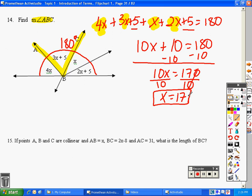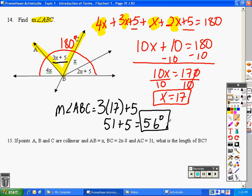I just have to answer the question. The question said, what did the measure of angle ABC equal? Well, the measure of angle ABC is 3 times X plus 5, so 3 times 17 plus 5. Just using your calculator, 3 times 17 is 51, plus 5, which is just 56 degrees. And we're done.